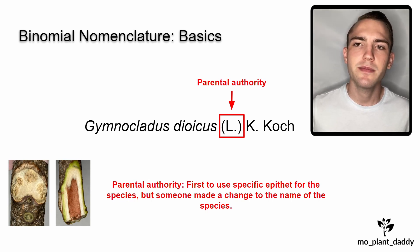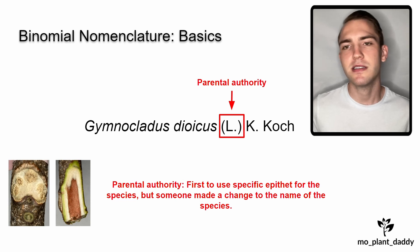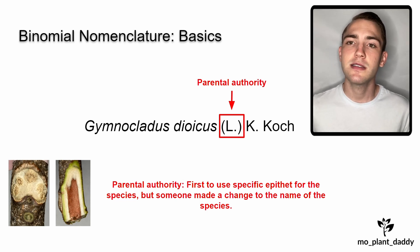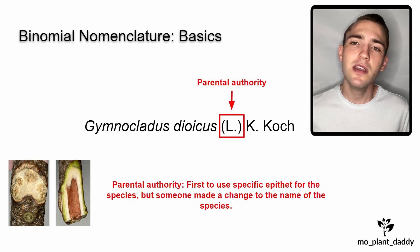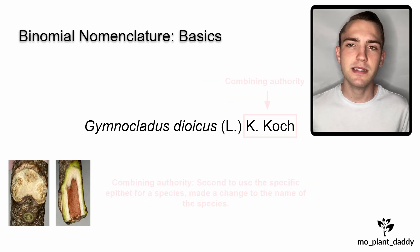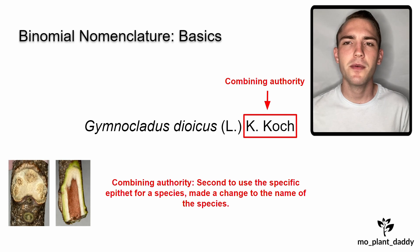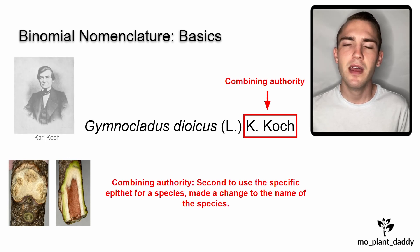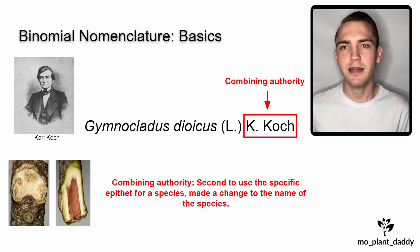But someone else made a change to the name of the species. If we recall from earlier, L stands for Linnaeus, so he originally described the species. Now, the name outside of the parentheses is called the combining authority. This is the person who was second to use the specific epithet for a species and made a change to the name of the species. K. Koch stands for Carl Koch, who is a German botanist.